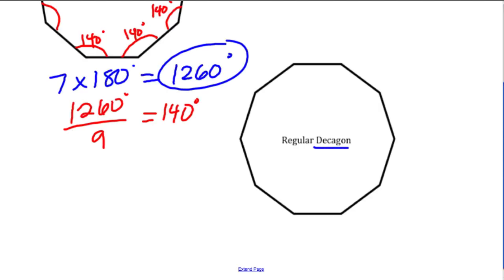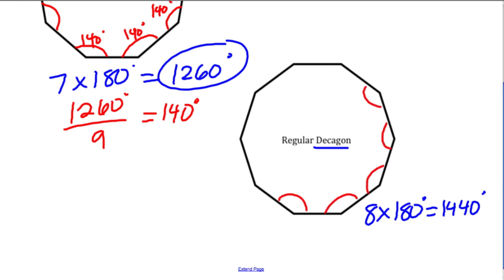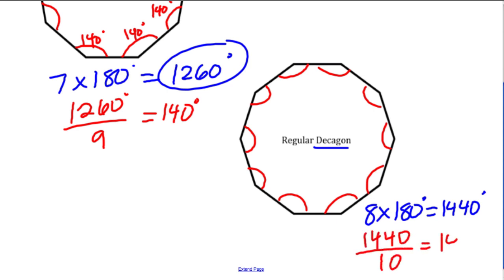A decagon has ten sides and eight triangles. Eight times 180 degrees is 1440 degrees. You can use your calculators to figure this out. A decagon has ten angles, so we take 1440 divided by ten and get 144 degrees. All interior angles add up to 1440 and the measurement of each one is 144 degrees.